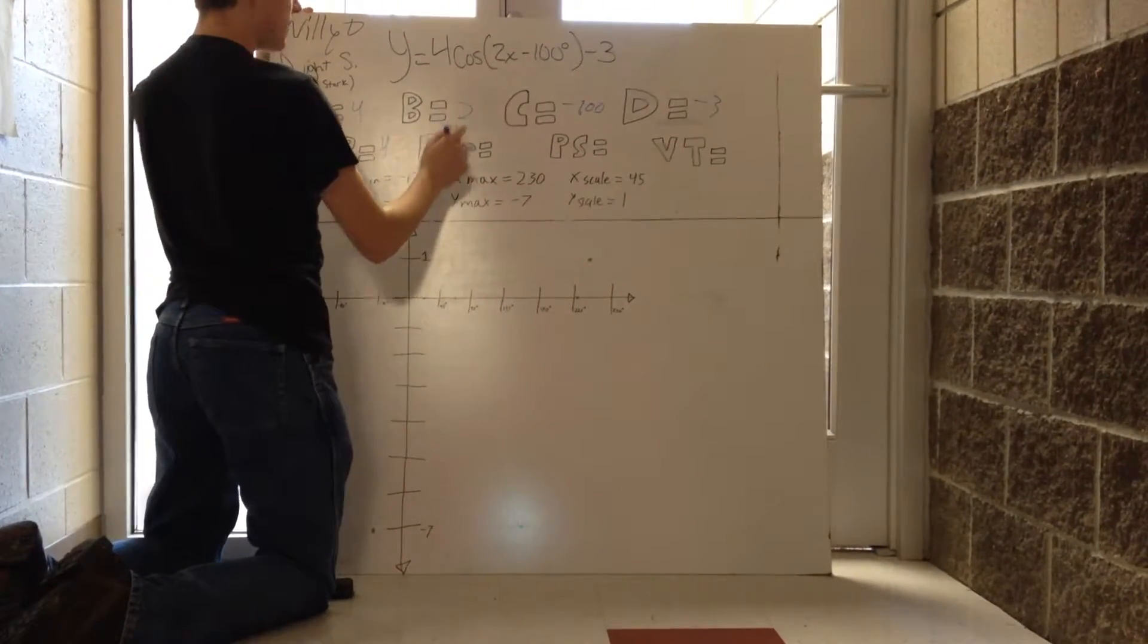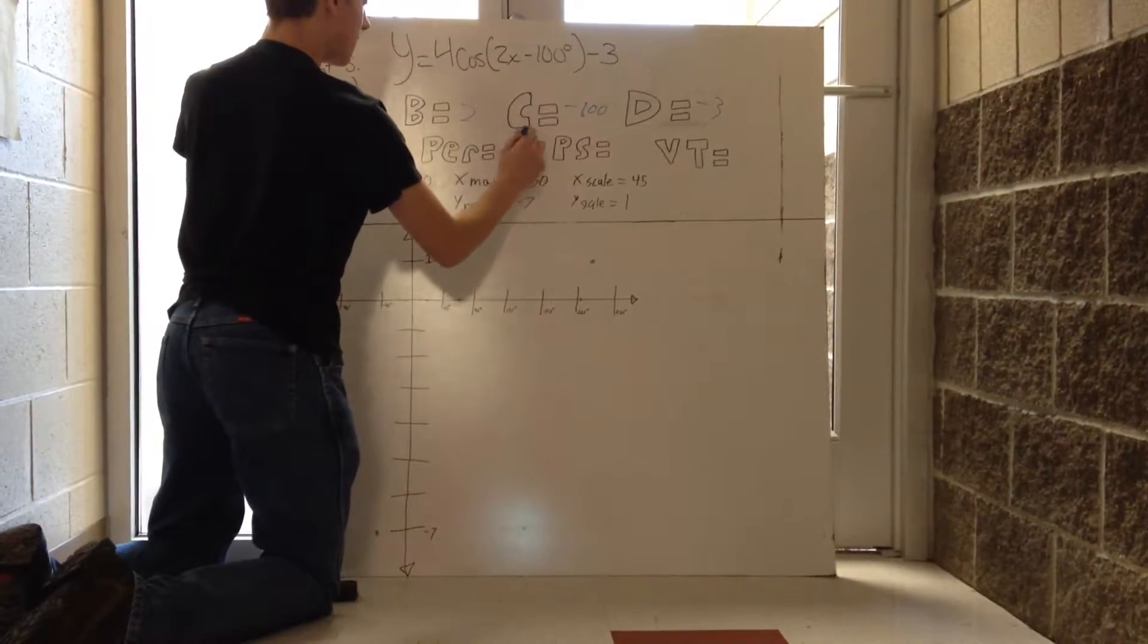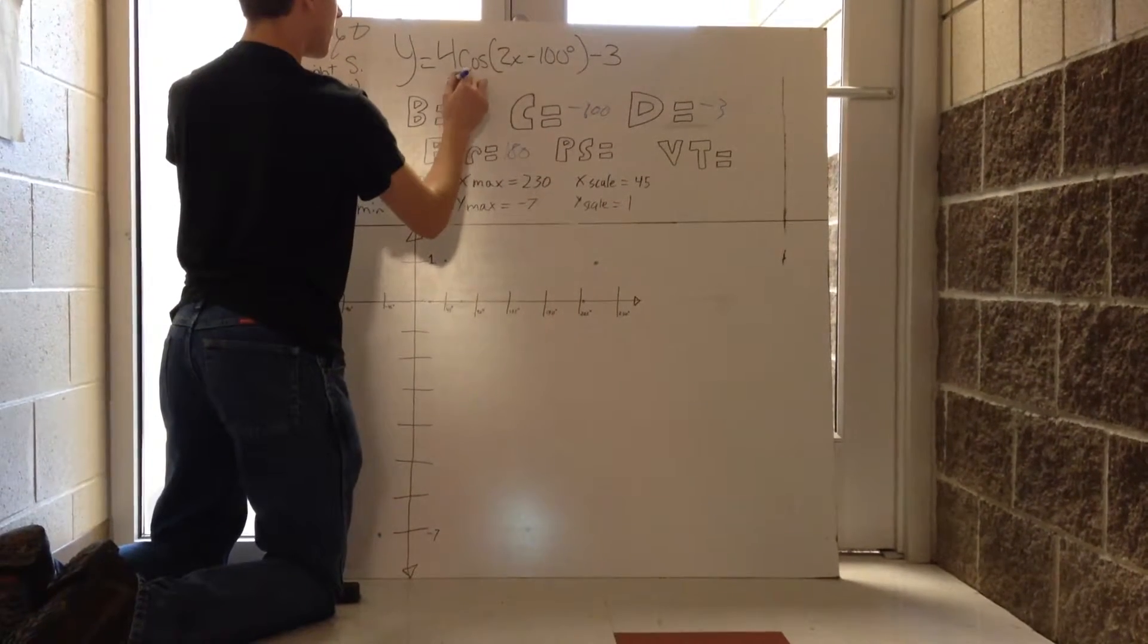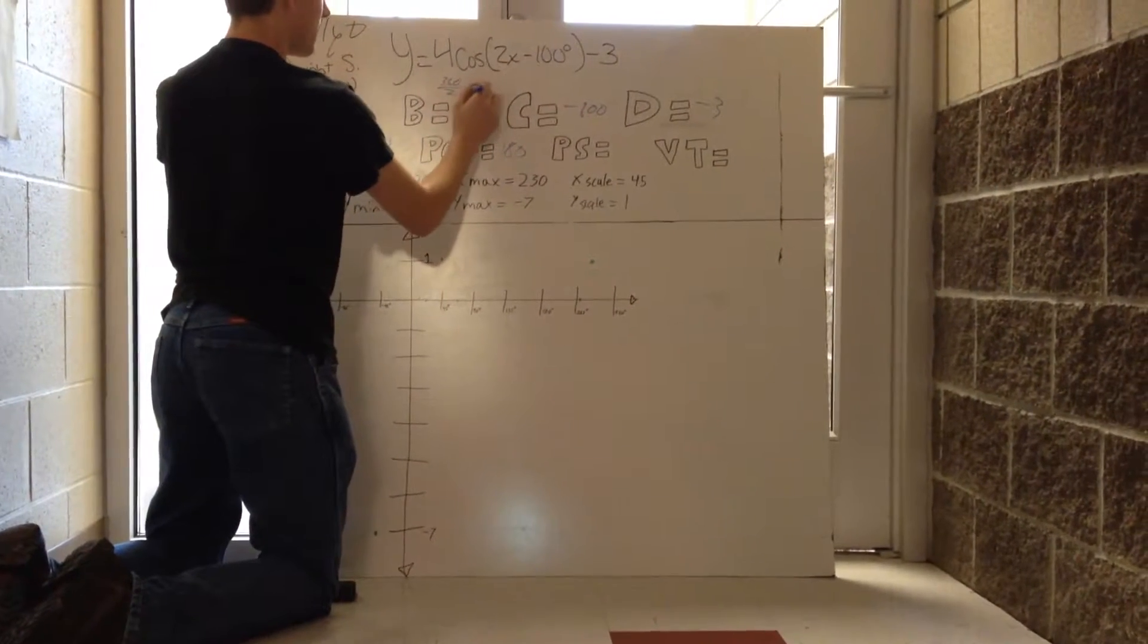For period, it'll be 180. That is because 360 divided by 2, that coming from here, equals 180.